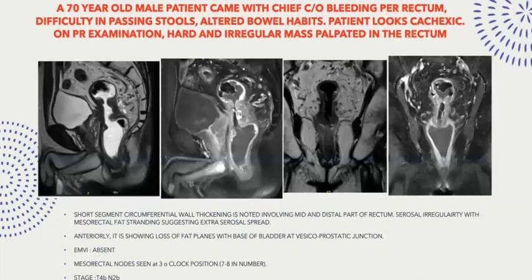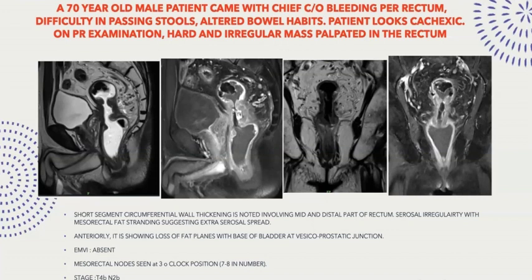A 70-year-old male patient presented with bleeding per rectum, difficulty in passing stools, and altered bowel habits. The patient was cachectic on examination with a hard irregular mass palpable in the rectum. MRI shows short segment circumferential wall thickening involving the mid and distal rectum. Serosal irregularity is seen with mesorectal fat stranding suggestive of extra-serosal spread. Anteriorly, there is loss of fat planes with the base of the bladder at the vesico-prostatic junction. Mesorectal nodes are seen at the 3 o'clock position, numbering more than 7-8. It is staged as T4B N2B.